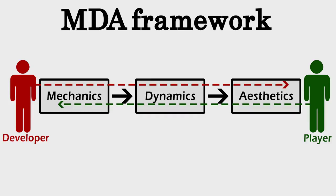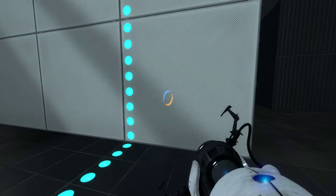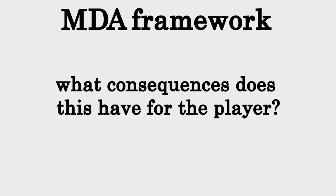So what is the MDA framework? It stands for Mechanics, Dynamics, and Aesthetics. It shows the fundamental difference between how players experience a game and how the developers experience it. When a developer creates a game, they have to start with making the mechanics behind the game — these are the very basic principles of a video game. So think for instance of Portal, where one of the mechanics is shooting portals. MDA asks: what consequences does this mechanic have on the players of the game? Well, this brings us to our next step: Dynamics.